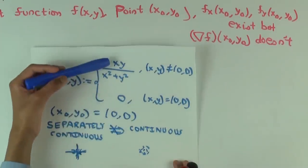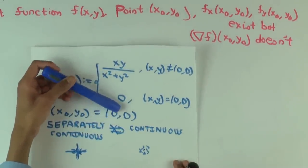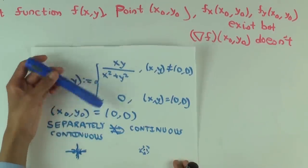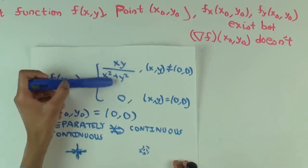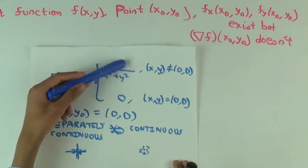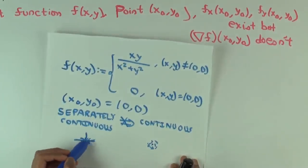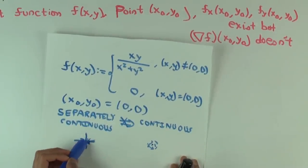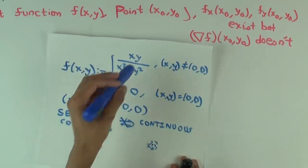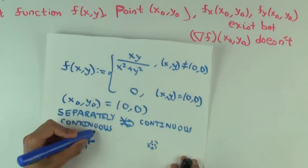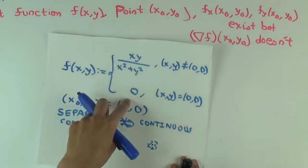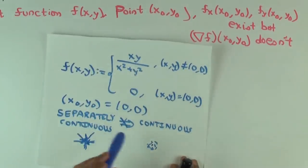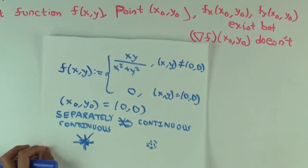Why does this work? At the origin, along the x-axis the function is identically 0, and along the y-axis it's also identically 0. So when you approach on the x or y lines, it is identically 0 — continuous at this point along each direction. On the other hand, if you approach along a diagonal direction, the limit is not equal to the value. You can see more on that in a video on this particular function.